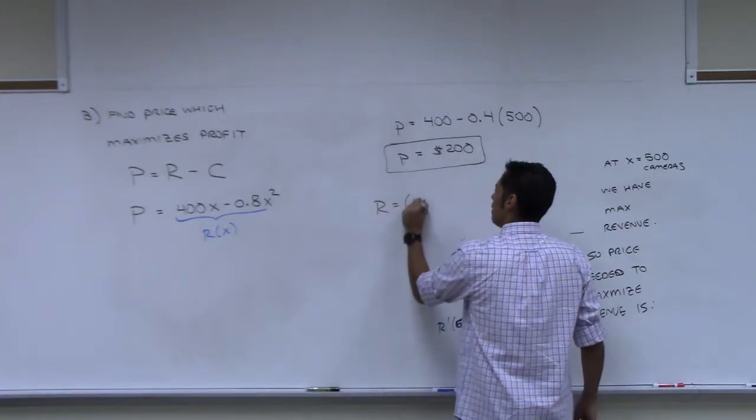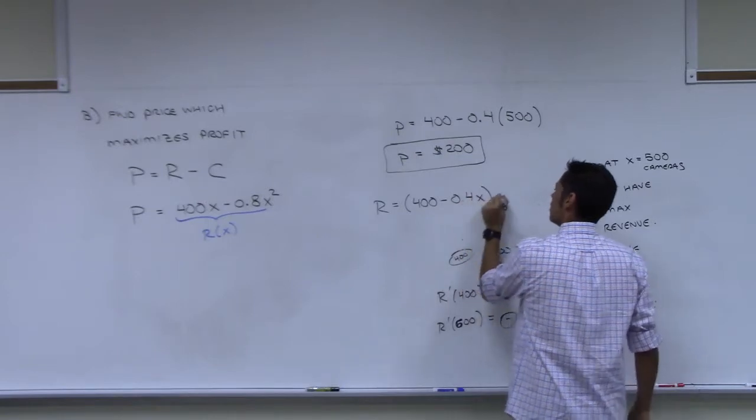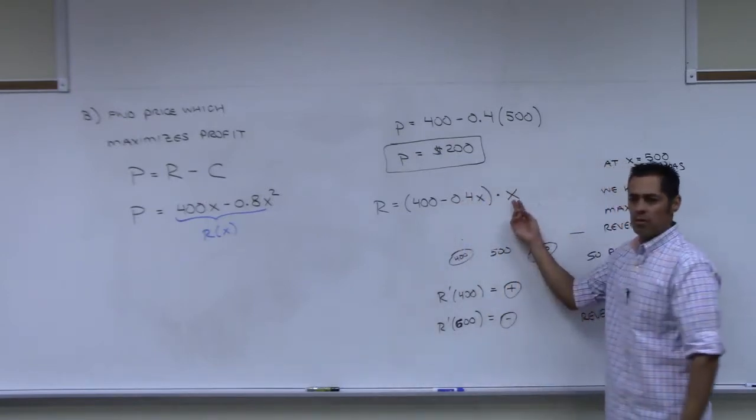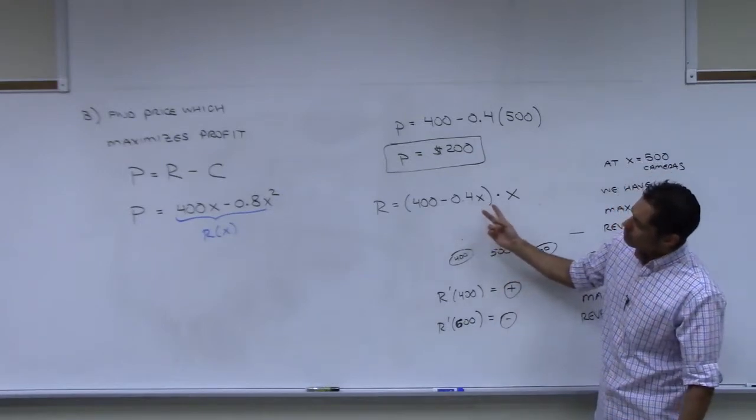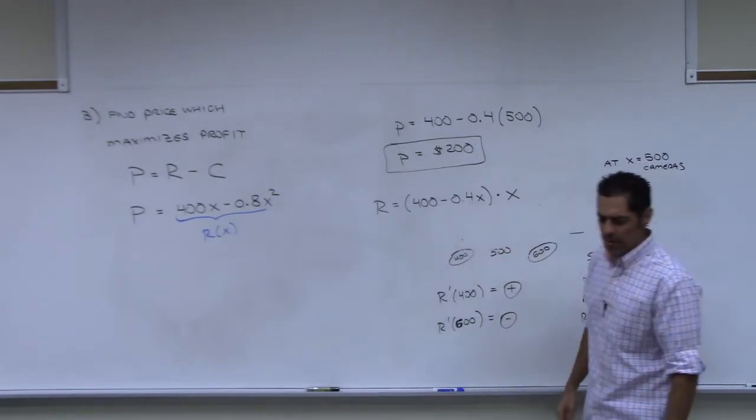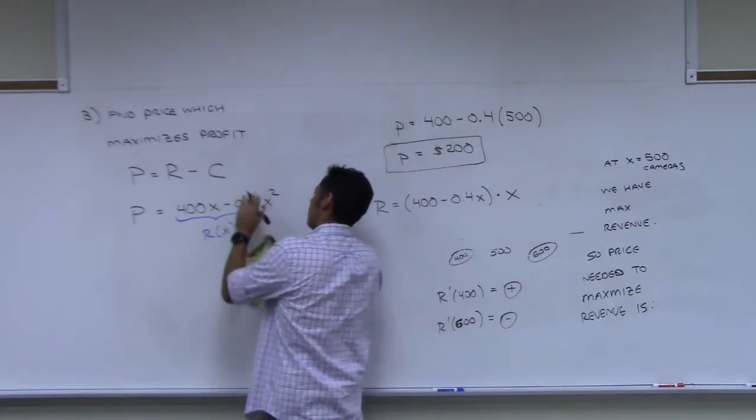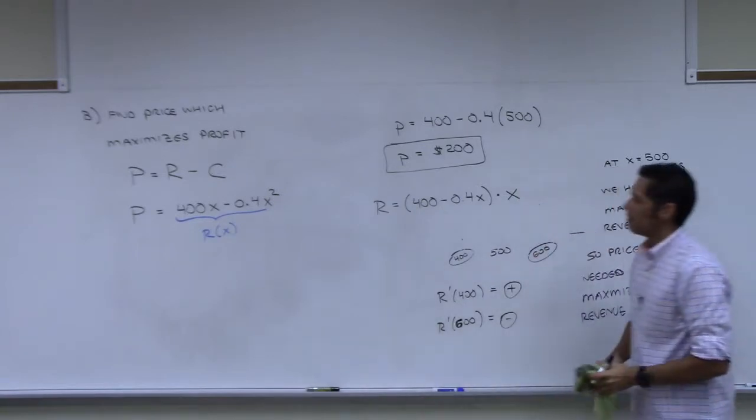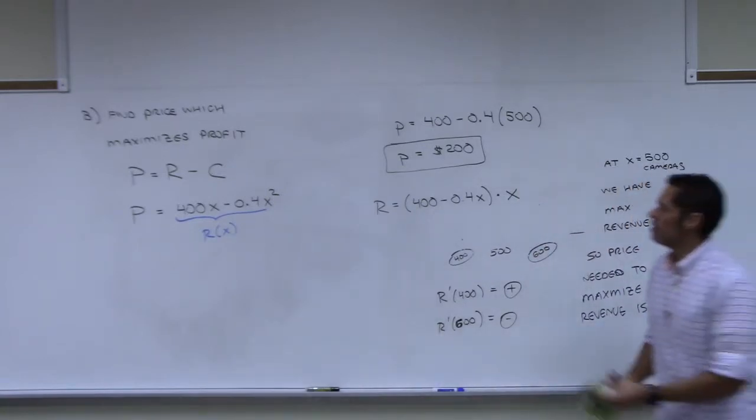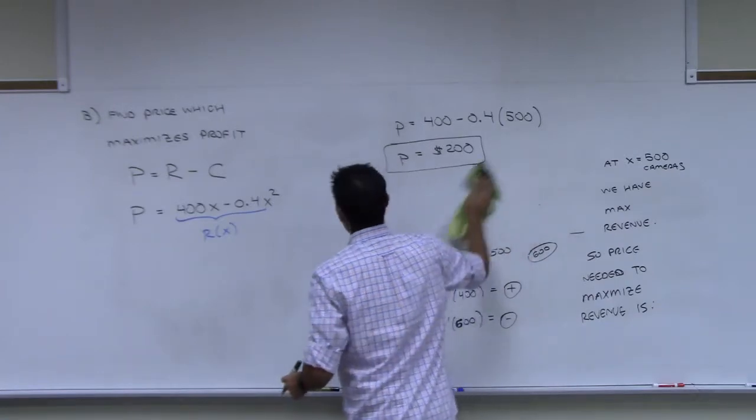I said revenue was the price demand equation times the number of items we sold, and then we distribute it through. Did I do the derivative? 0.4. You're right, you're right. I'm trying to go off memory here. Okay, that was it, right? Okay, my apologies. So that's my revenue.